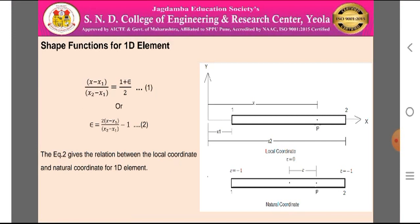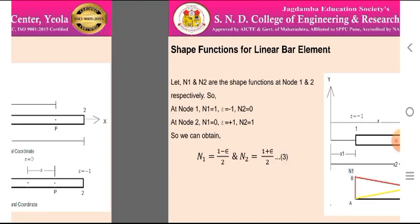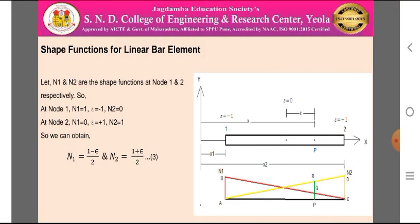Equation 2 gives the relation between local coordinate and natural coordinate system for a one-dimensional element. For a linear bar element, let N1 and N2 be the shape functions at node 1 and node 2. At node 1, N1 = 1, N2 = 0, and ε = -1. We can write: N1 = (1 - ε) / 2 and N2 = (1 + ε) / 2 — Equation 3. The figure shows N1 in red and N2 in yellow.